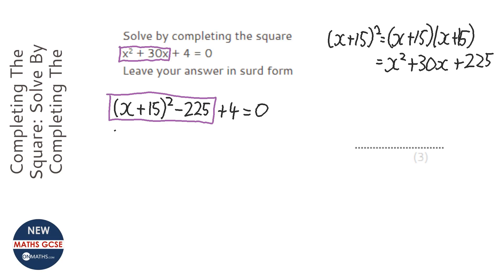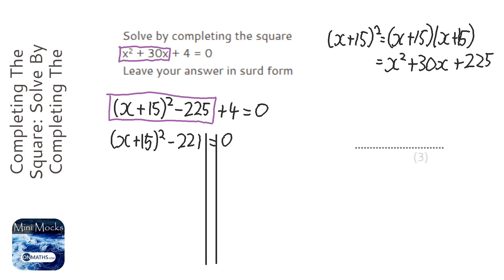So I'm going to do the same first bit: (x+15)² but then it's minus 221, equals zero. Next I'm going to put my lines in because we are rearranging to solve. First thing I'm going to do is plus 221 both sides, so we've got (x+15)² = 221.